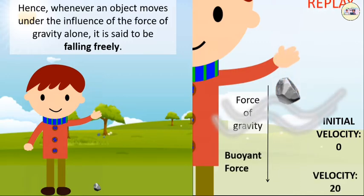During free fall, frictional force due to air opposes the motion of the object, and buoyant force also acts on the object. Thus, true free fall is only possible in a vacuum.